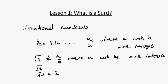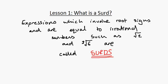Let's now exactly define the term surd. The definition of a surd is: expressions which involve root signs and are equal to irrational numbers, such as root 2 and the cube root of 6, are called surds. It doesn't have to be only root 2 and the cube root of 6—those were just examples—but as long as they're equal to irrational numbers and involve root signs, they are classified as surds.